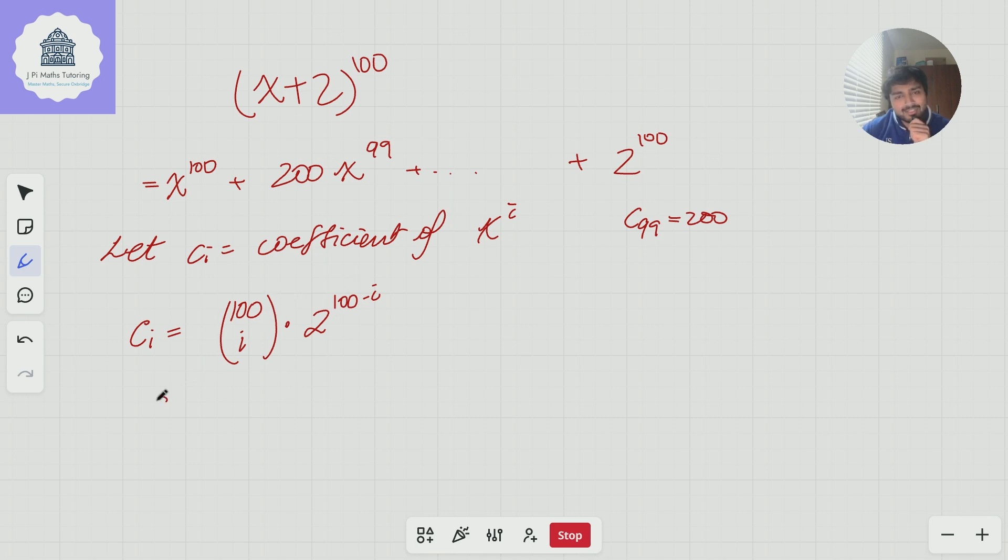And what I'm going to do is consider c_{i+1} divided by c_i. Before I do that, I want to say that c_{i+1} is going to be bigger than c_i if and only if c_{i+1} over c_i is bigger than 1. So this is clearly true. I've just divided both sides by c_i. All the coefficients here are clearly positive, so I don't have to worry about any dividing by negative number issues.